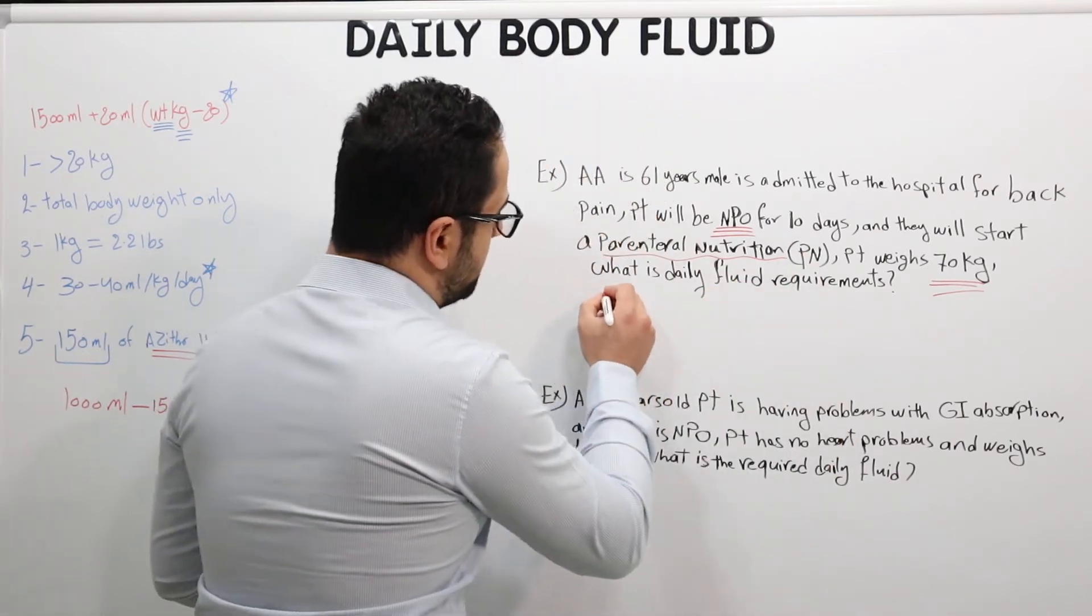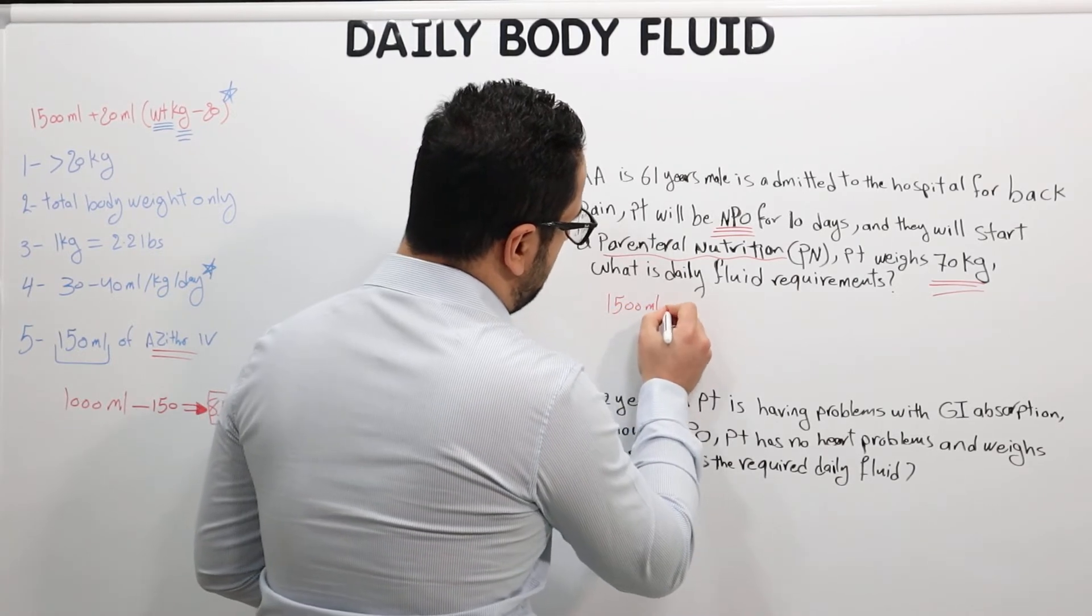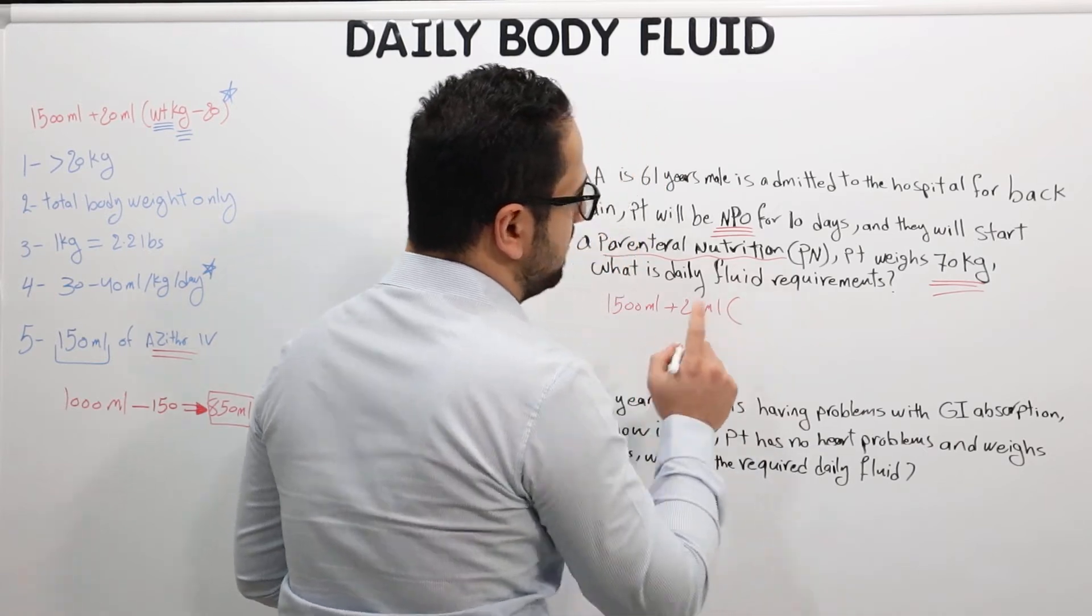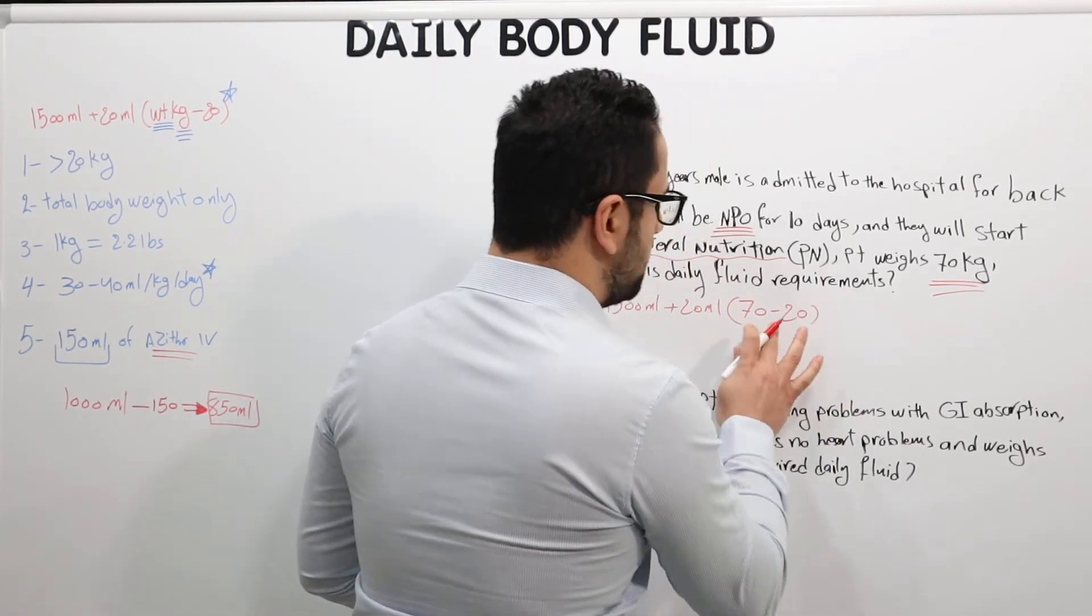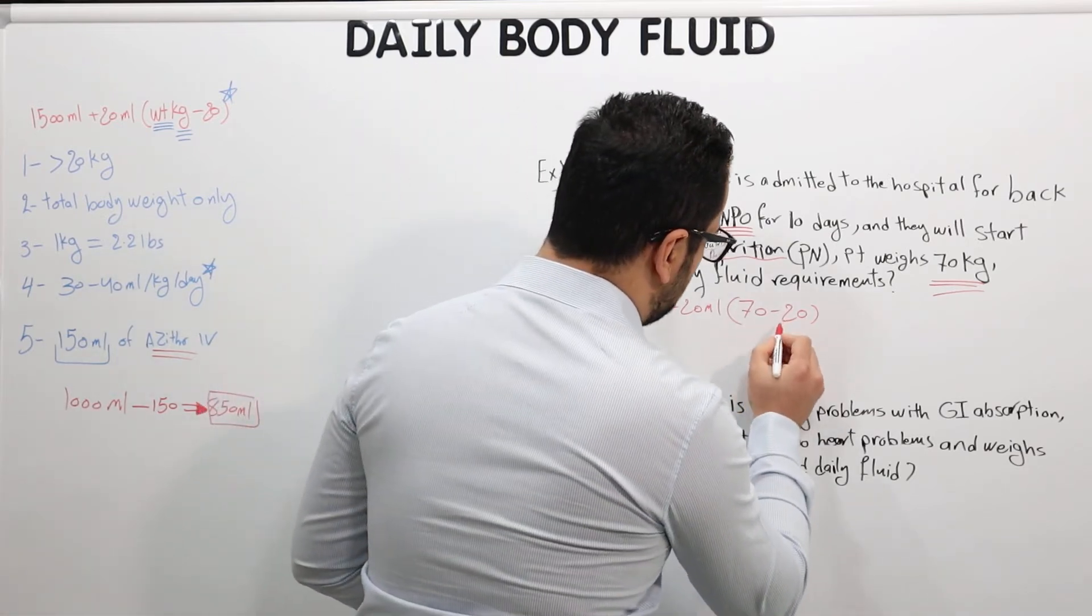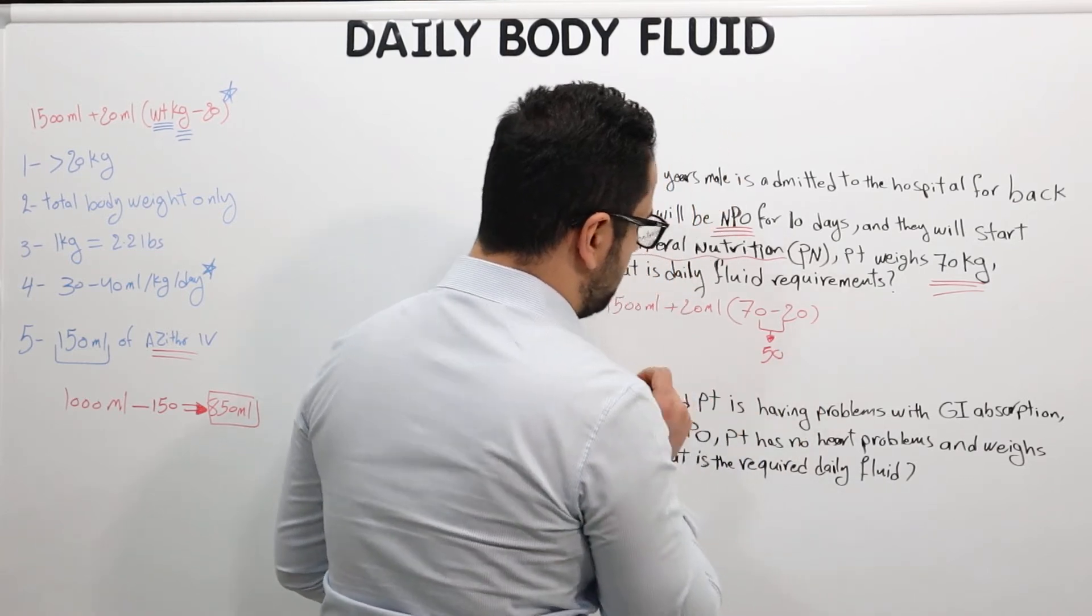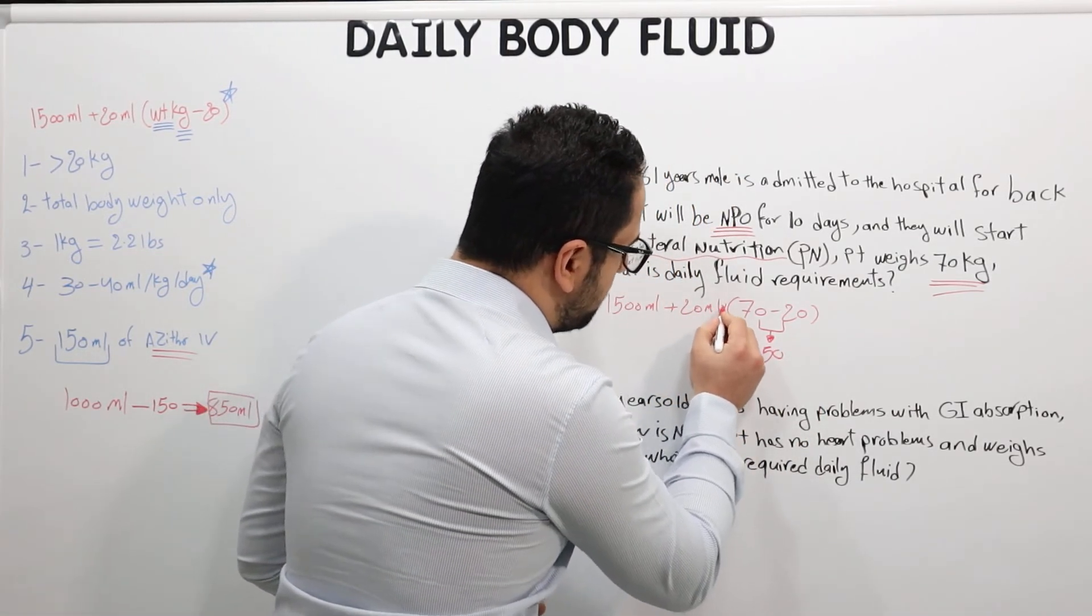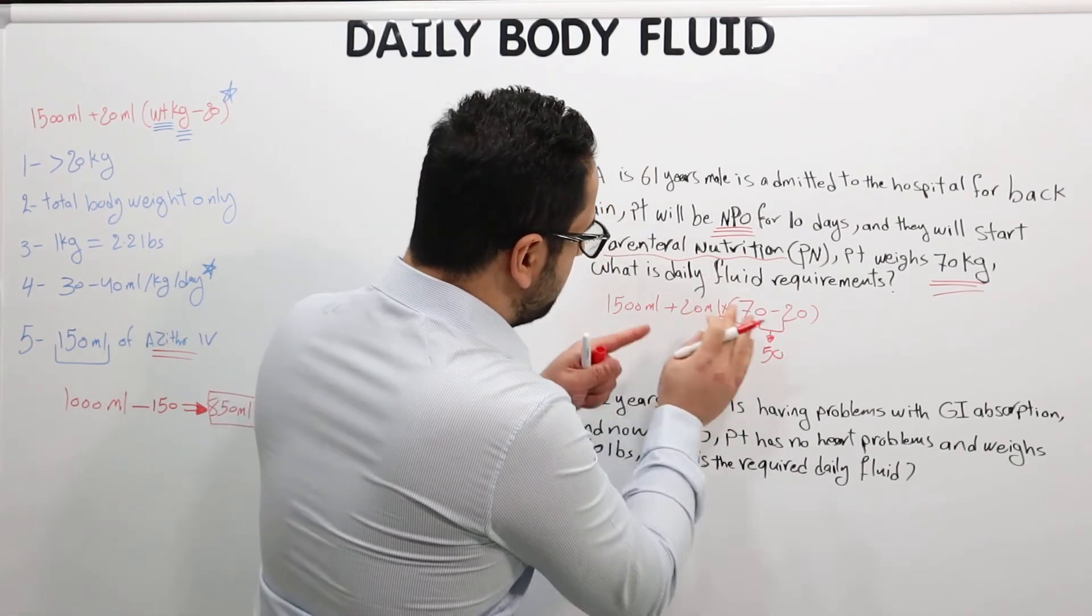Let's apply the formula. We know it's 1500 milliliters plus 20 milliliters times 70 minus 20. 70 minus 20, that's 50. So from here it's 50. 20. Don't forget there is a multiplication.